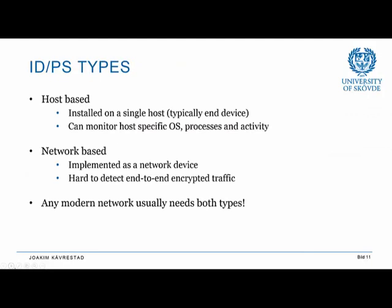IDPS types can be both host-based and network-based. Host-based IDPSs are installed on a single host, typically an end device, and can monitor host-specific operating system processes and activity. Network-based IDPSs are implemented as network devices, but a big drawback is that it's hard to detect end-to-end encrypted traffic — for example, HTTPS browsing creates encryption between client and web server that a network-based IDPS cannot analyze. Modern networks usually combine both types, with both network-based and host-based sensors.